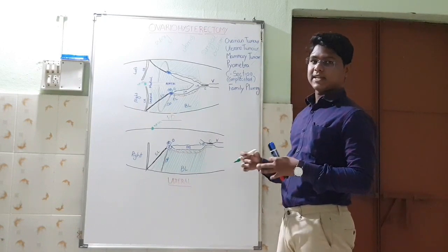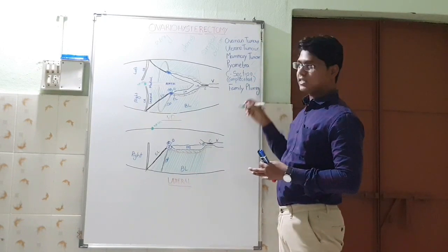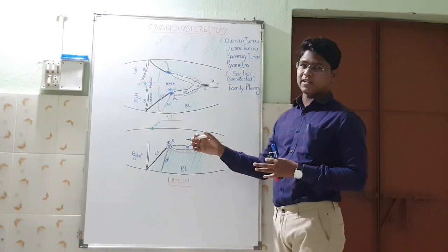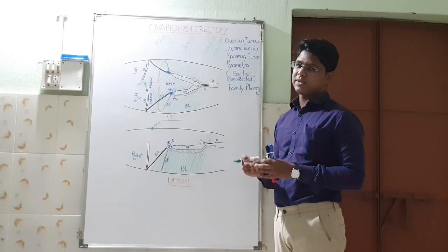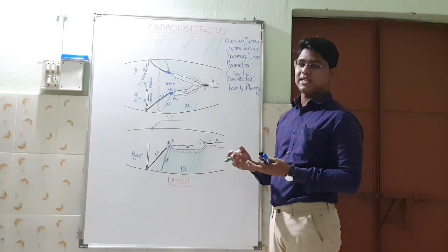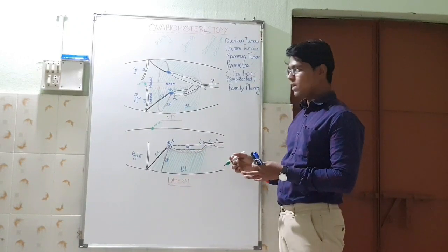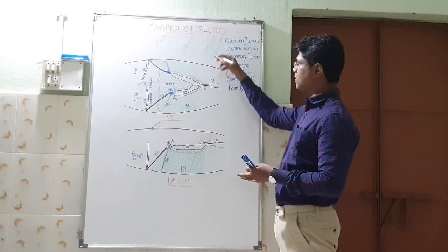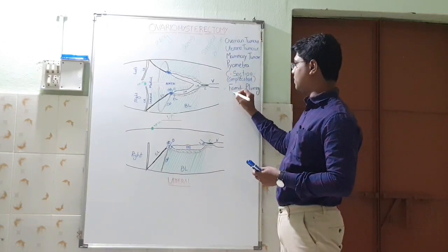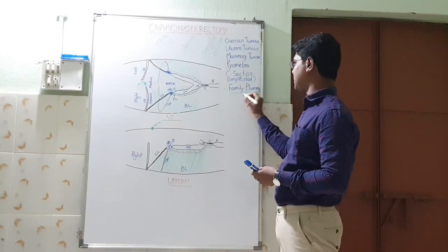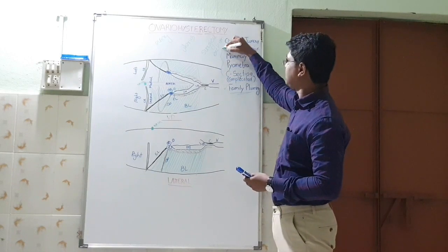Sometimes we get cases in which the C-section is delayed. During C-section, if something is happening, to save the animal's life we can go for ovariohysterectomy. These are pathological cases, and it is also a family planning operation.